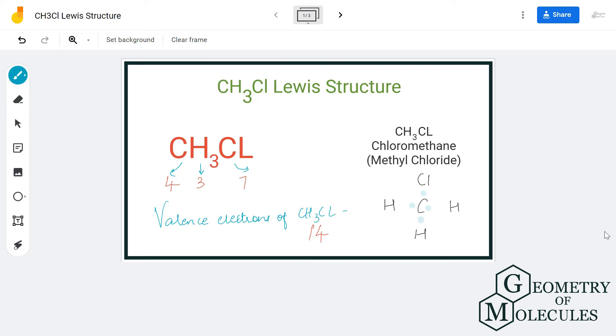Similarly, the more electronegative atom of this molecule, that is chlorine, will be also on the outside. Here, hydrogen atom needs two electrons to attain a stable structure, and all the hydrogen atoms will start sharing one electron of the carbon atom by forming bonds to attain the stable structure.